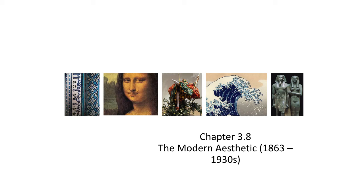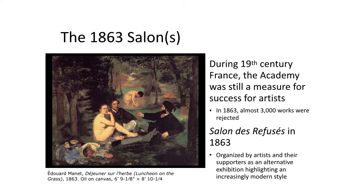Hello everyone, today we're going to be talking about the modern aesthetic, coinciding with chapter 3.8 in your textbook. In the 19th century, we've already been talking about the salon or the French Academy that had a hierarchy of artwork where history paintings were at the top and still life paintings were at the bottom. In the 19th century, the Academy was still a measure of success for artists. In the year 1863 alone, nearly 3,000 artworks were actually rejected, which prompted the initiation of what was called the Salon des Refusés.